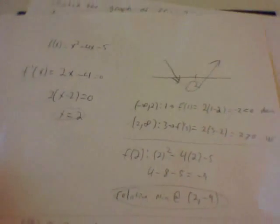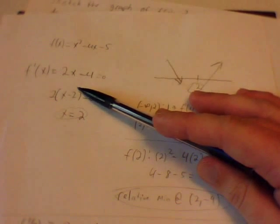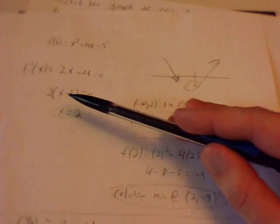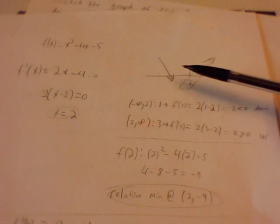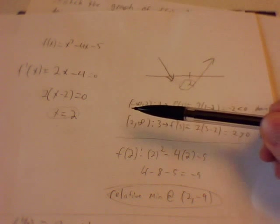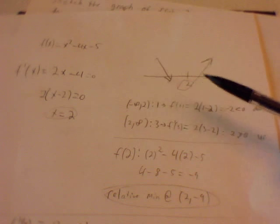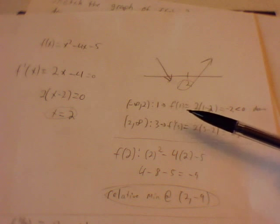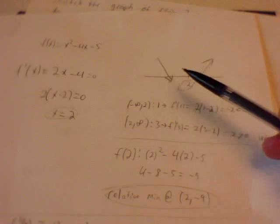Next we are going to find the first derivative. We take the original equation and find the derivative, giving us f'(x) = 2x - 4. Setting that equal to 0, we get 2(x - 2), which gives x = 2. We then look at the interval from negative infinity to 2. Plugging in 1 for f'(x) gives negative 2, so the function is decreasing on that interval.